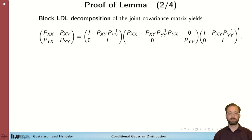We start by looking at the covariance matrix of the joint distribution, which we make a block LDL decomposition of, giving this form here.